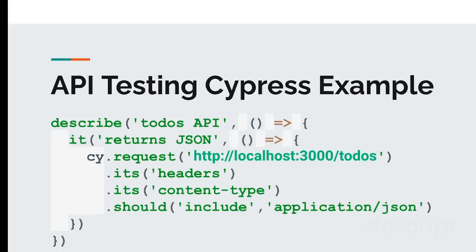In our upcoming lectures, we'll see how we can do API tests for the status — like if it's a successful status, it should match 200; if it fails, like page not found, it should match 404. There is also a very interesting and powerful feature in Cypress where you can mock your network response. This is something that even big API testing applications like Postman or Insomnia can't do — you can mock your response. So in Cypress it is possible, and in the upcoming lectures we'll see how to handle those scenarios, including mocking your network response.